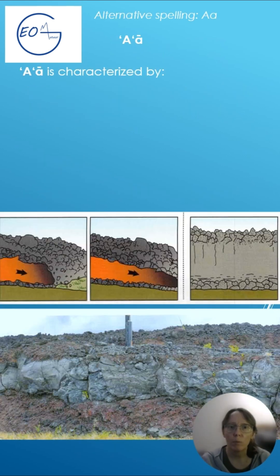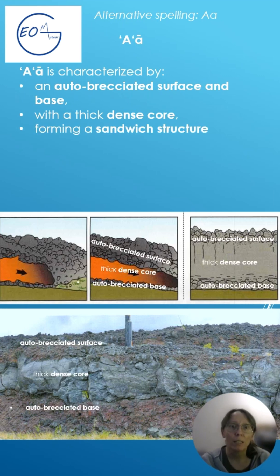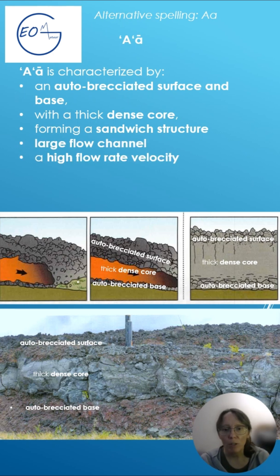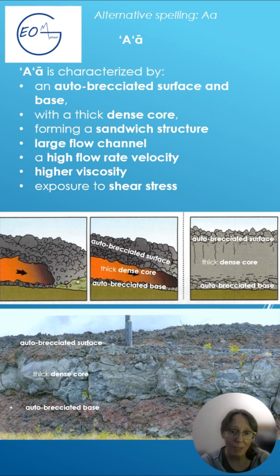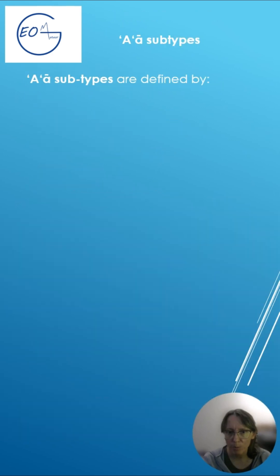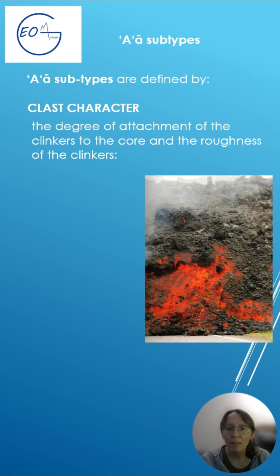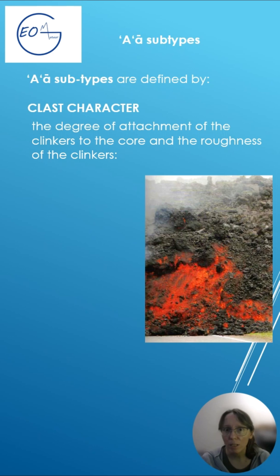Aa is characterized by an autobreciated surface and base with a thick, dense core forming a sandwich structure, large flow channel, a high flow rate velocity, higher viscosity, exposure to shear stress, especially on steep, rough slopes. Aa subtypes are defined by clast characteristics indicating the degree of attachment of the clinkers to the core and the roughness of the clinkers.